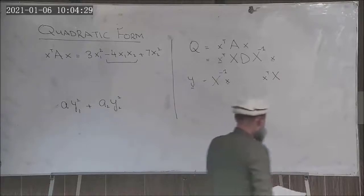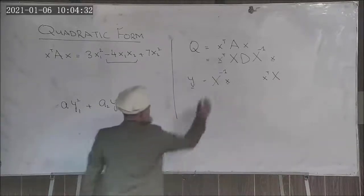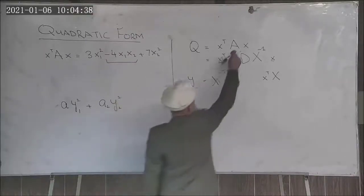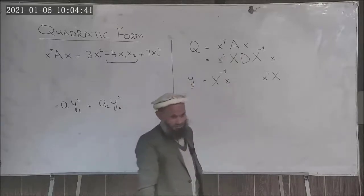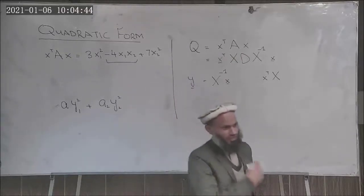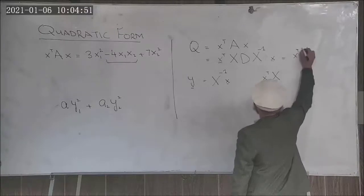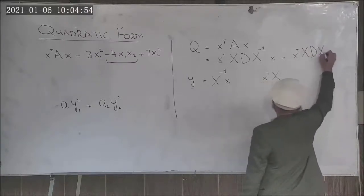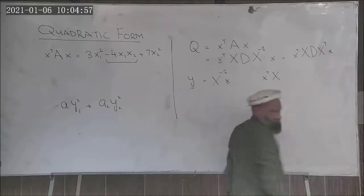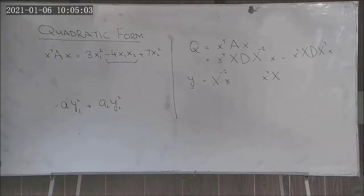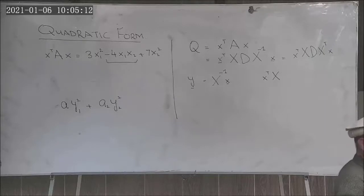For symmetric matrices — and we have just learned that the matrix A can always be written as a symmetric matrix — the eigenvector matrix X is orthogonal. For orthogonal matrices, X⁻¹ equals X^T.